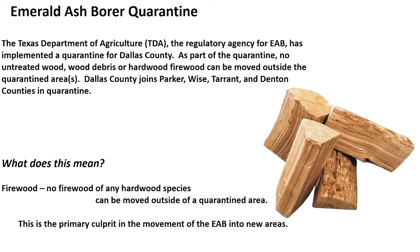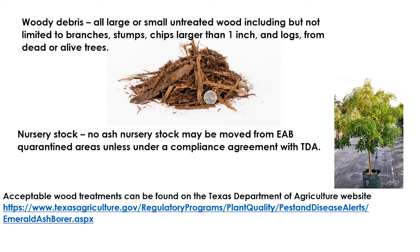What is quarantine? The Texas Department of Agriculture is the regulatory agency for EAB and has implemented a quarantine for Dallas County. As part of the quarantine, no untreated wood, wood debris, or hardwood firewood can be moved outside the quarantine area. This is the primary culprit in movement of EAB into new areas. Woody debris includes all large or small untreated wood including but not limited to branches, stumps, chips larger than an inch, and logs from dead or alive trees, as well as nursery stock. No ash tree nursery stock can be moved from an EAB quarantine area unless under a compliance agreement with the Texas Department of Agriculture. The TDA website offers acceptable wood treatments that you can check out.